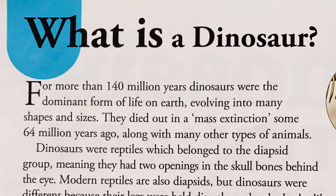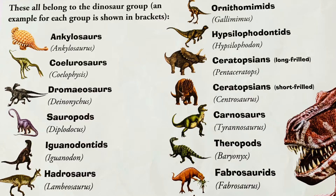Dinosaurs were reptiles which belonged to the diapsid group, meaning they had two openings in the skull bones behind the eye. Modern reptiles were also diapsids, but dinosaurs were different because their legs were held directly under the body, like those of modern mammals. This meant they could move fast, giving them a huge advantage over other animals of the time.